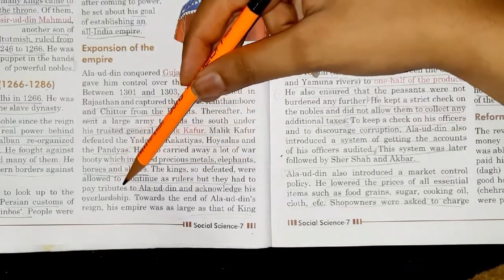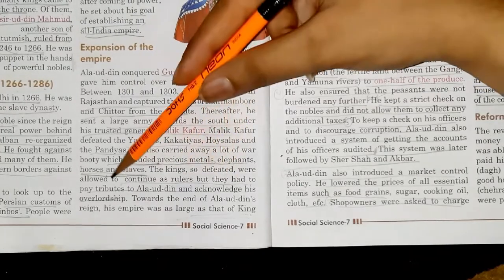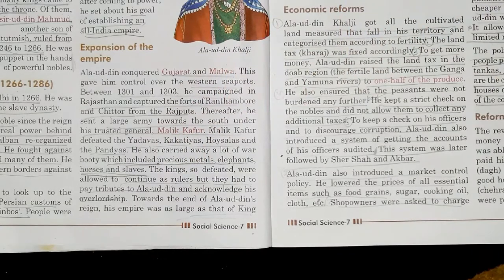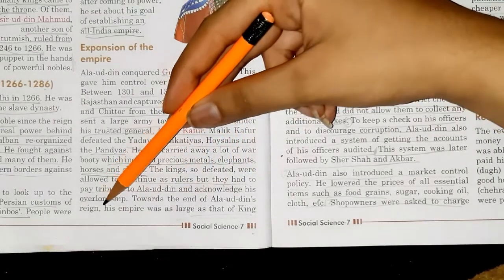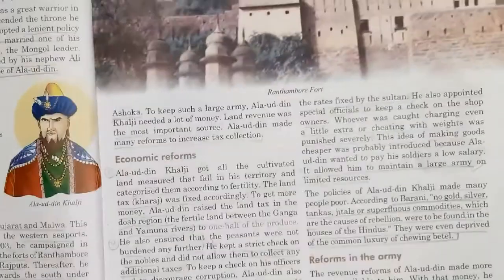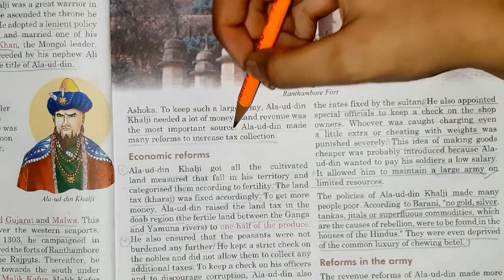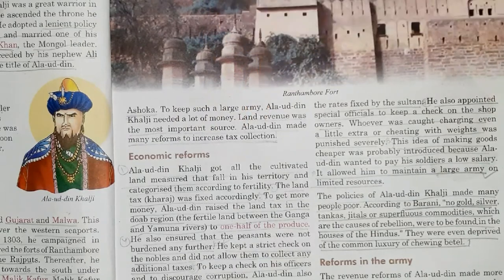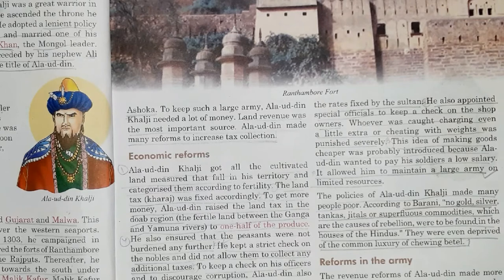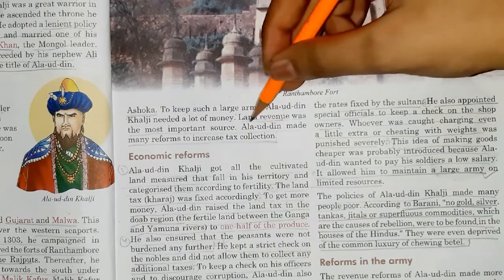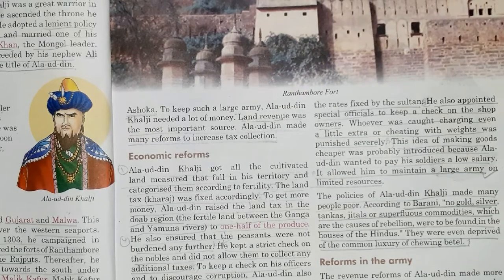Many of the defeated kings were allowed to continue their rule, but they had to pay large tributes to Alauddin and acknowledge his overlordship — meaning they had to accept him as their superior. Towards the end of Alauddin's reign, his empire was as large as that of King Ashoka. To maintain such a large army, Alauddin needed a lot of money. Land revenue was the most important source, so he made many economic reforms to increase tax collection. We will cover these economic reforms in the next class.